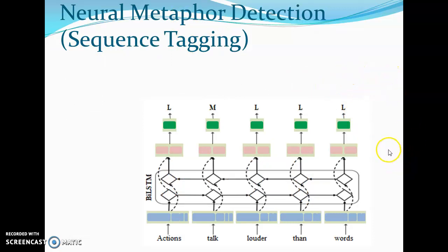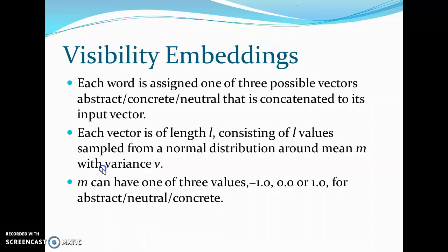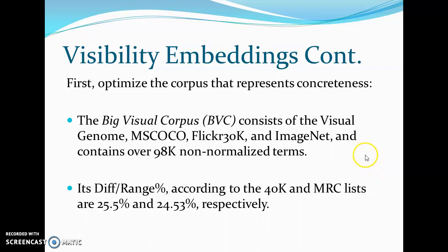We start with the simple architecture suggested by Gao and colleagues. We have an input embedding for each token, a BLSTM and a feedforward layer, and one output per token. For the construction of the visibility embeddings, each word is assigned one of three possible vectors to represent whether the word is abstract, concrete, or neutral. Each vector is of length L with values around some mean M, and can be minus 1, 0, or 1 based on concreteness.